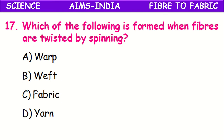Which of the following is formed when fibers are twisted by spinning? When fibers are twisted by the process called spinning, it makes yarn. Yarn is made from fiber by spinning.